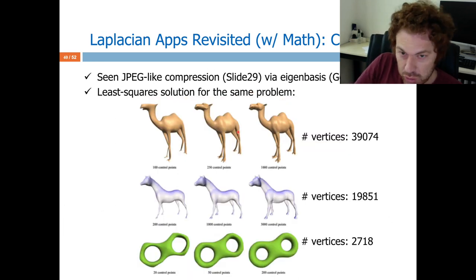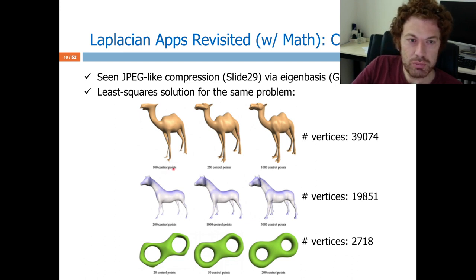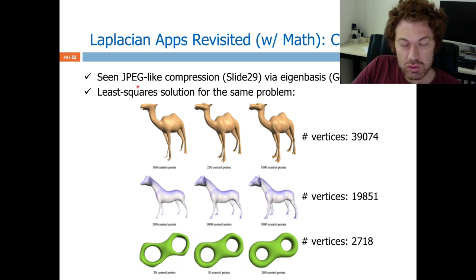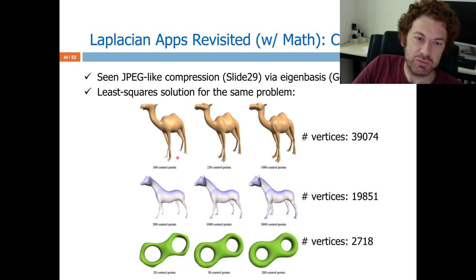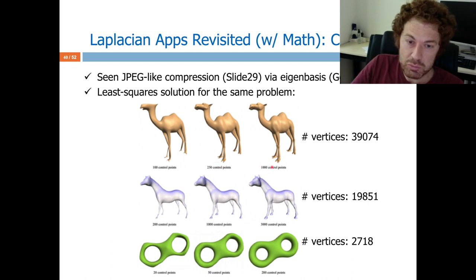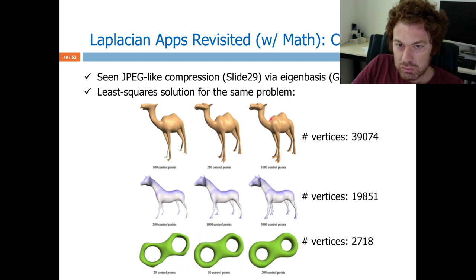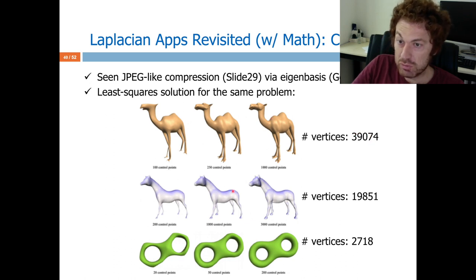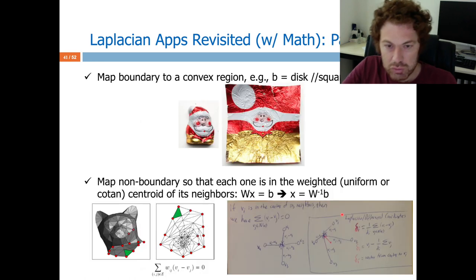With 100 control points I can still do recovery — this is like JPEG compression, where you can increase compression quality by using more bases; here I use more control points. With 1,000 control points I am already good to go — remember originally I have 40,000 vertices. Similarly for the horse and the doubled horse examples.